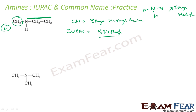Now the longest chain has two carbons — ethyl. So it will be ethyl, all single bond, ane, and then amine. Joining this together, it is N-methylethanamine. Why N-methyl? Because this methyl is attached to nitrogen. This is N-methyl and then the normal ethyl amine part.